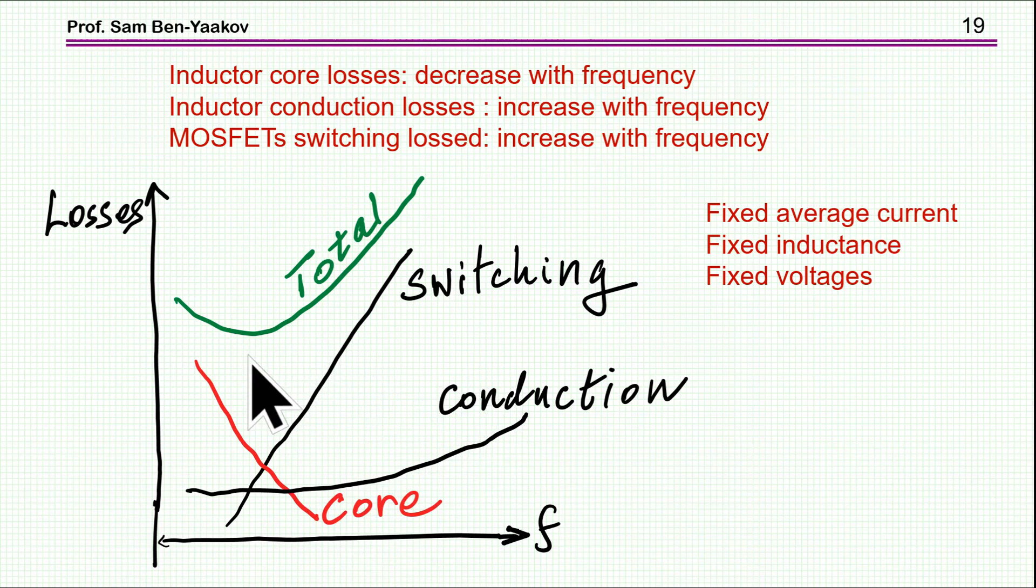So if I sum all these up for the inductor and the MOSFET in terms of switching and conduction losses, I see that there is a reduction here as the frequency goes up.